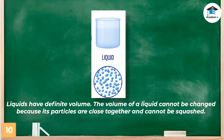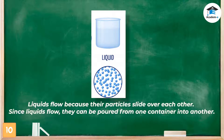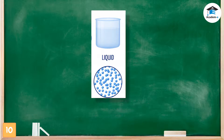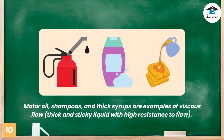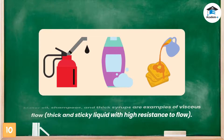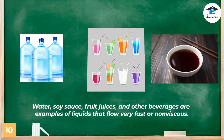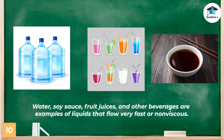Liquids flow because their particles slide over each other. Since liquids flow, they can be poured from one container into another. However, some liquids have molecules that are strongly bound to one another, which prevents them from flowing fast. Motor oil, shampoos, and thick syrups are examples of viscous liquids — thick and sticky with high resistance to flow. Water, soy sauce, fruit juices, and other beverages are examples of liquids that flow very fast, or non-viscous liquids.